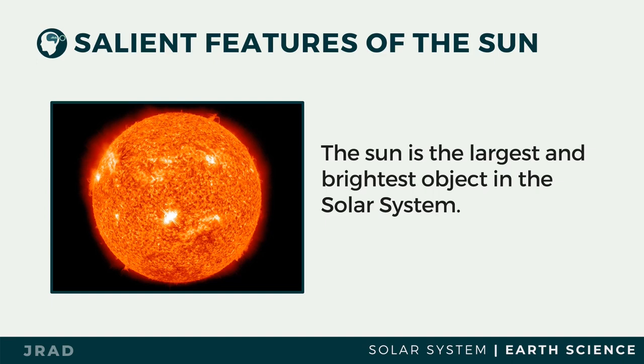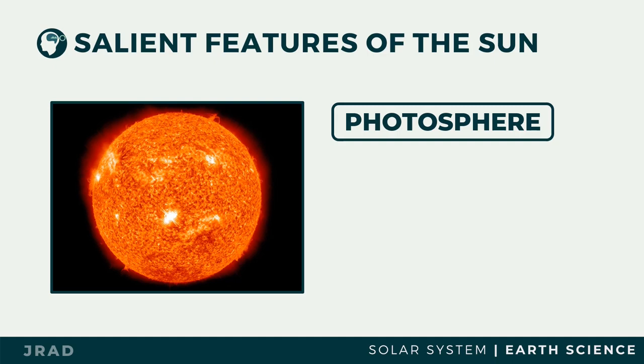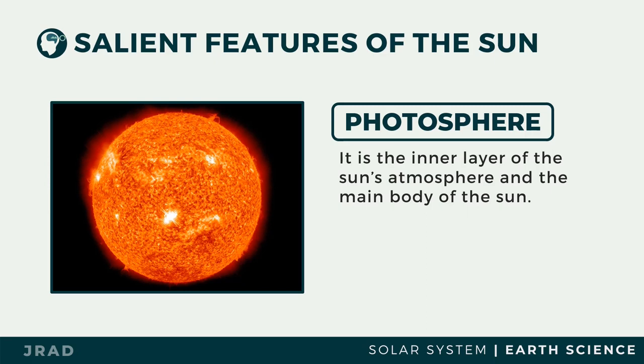Being the center of the solar system, the Sun is by far the largest and the brightest object in it. The Sun comprises about 99.86 percent of the total mass of the solar system. Just like planets, the Sun does have an atmosphere, which is very different from the Earth's.